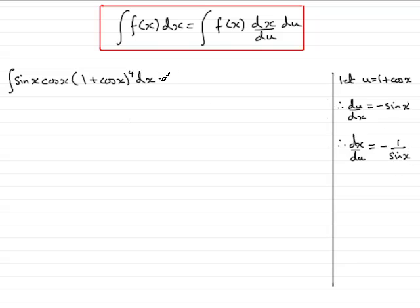So we now substitute for our dx, replace it with dx/du times du, and so we have sine x cos x multiplied by (1 plus cos x) to the power 4. In place of dx/du then we have minus 1 over sine x, so write there in brackets, minus 1 over sine x, and then we have du.